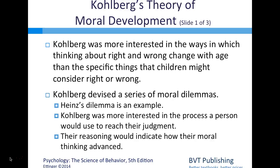Kohlberg was more interested in the process a person uses to reach their judgment than the judgment itself—a person's reasoning would indicate how their moral thinking had advanced. He used a complex scoring system to assign subjects to a particular stage of moral reasoning. This approach led him to propose that we move through as many as six stages of moral reasoning across three basic levels: pre-conventional, conventional, and post-conventional.